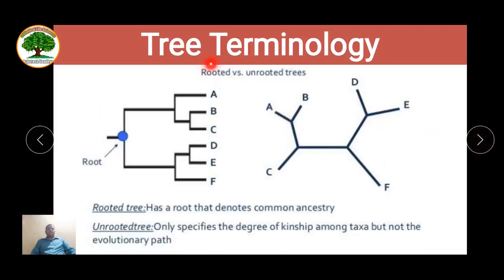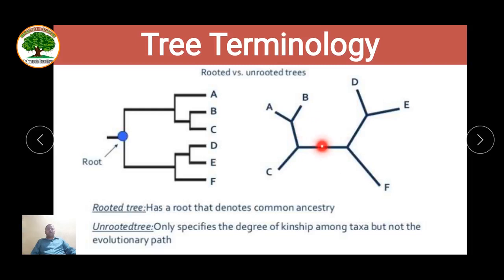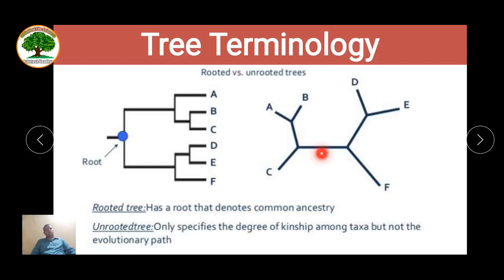The phylogenetic tree can be rooted or unrooted. A rooted tree has a particular origin or common ancestor. But an unrooted tree does not determine a particular common ancestor; it only specifies the degree of kinship among the taxa but not the evolutionary path. In an unrooted tree, the starting point is not represented, so the common ancestor cannot be predicted.